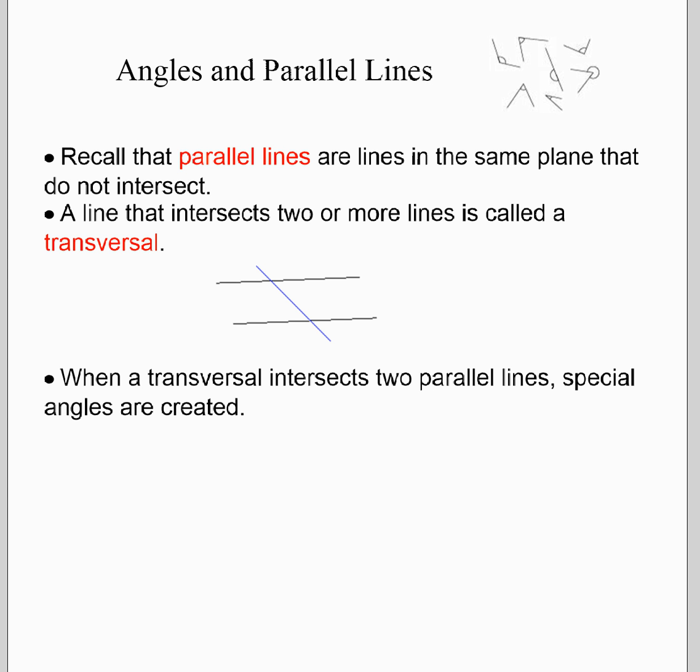In the investigation that you just completed, you were introduced to a new term called a transversal. A transversal is a line that intersects two or more lines. When that transversal intersects two parallel lines, special angles are created.